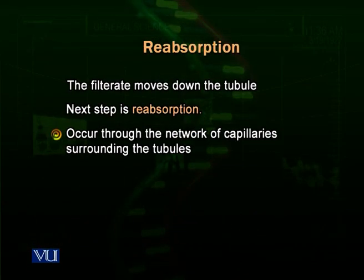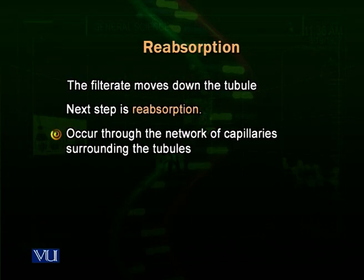The renal tubule is highly convoluted and the filtrate has to pass through all of these convoluted parts. The tubule is surrounded by a network of capillaries, so it is richly supplied with blood vessels except for the collecting duct. This makes reabsorption easy in this functional unit of the kidney, occurring through the network of capillaries surrounding these tubules.